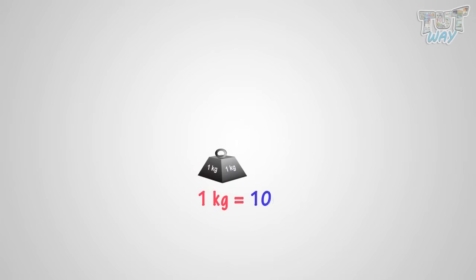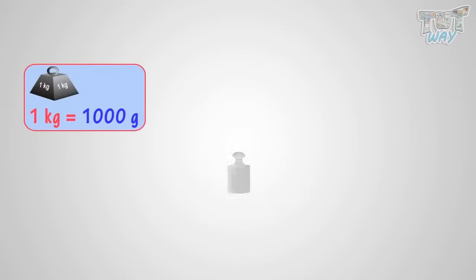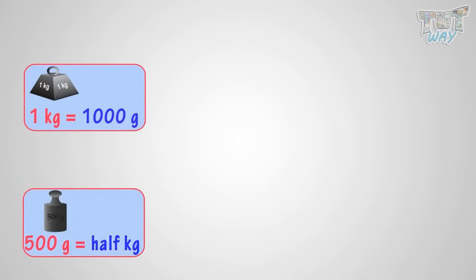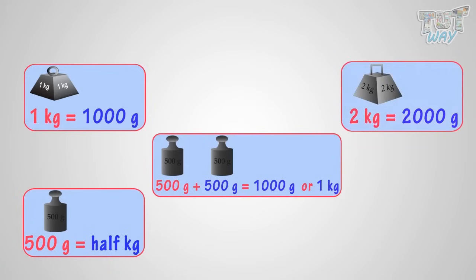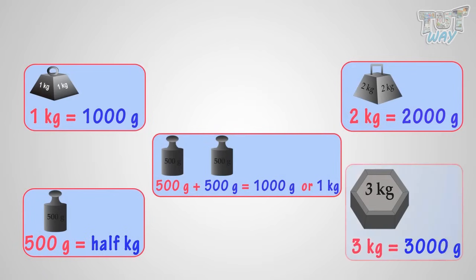1 kilogram is 1,000 grams. 500 grams is half kg. 500 grams plus 500 grams will be 1,000 grams or 1 kilogram. 2 kilograms is 2,000 grams. 3 kilograms is 3,000 grams.